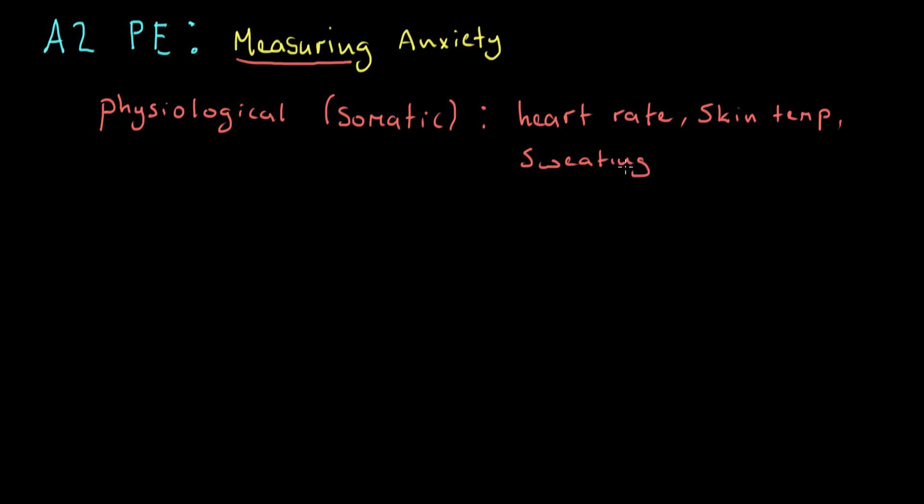So there are certain physical measures that would allow us an insight into how anxious an athlete or a group of athletes were performing. But some of these are fairly straightforward setups. Something like heart rate, skin temperature and sweating might be kind of less typical.